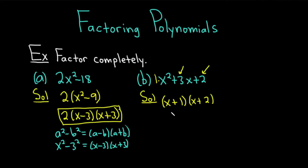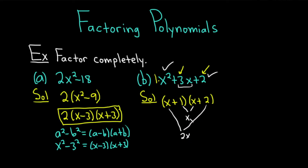You should always check. You can look at x times x — that's x squared, that part's easy. Then 1 times 2 is 2, that part's easy. The hard part is the 3x. The inner piece is x because 1 times x is x, and the outer piece is 2x. If you add the inner and the outer, you always get the middle term. 2x plus x is 3x. The answer to this one is x plus 1 times x plus 2.